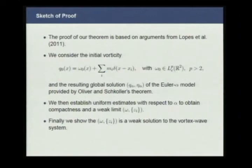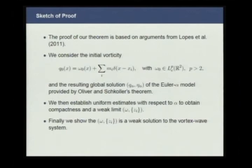The sketch of the proof uses as a base arguments from the paper of Lopes, Nussenzveig Lopes, and Miot. We consider the initial vorticity as the superposition of point vortices and background vorticity omega_0 with omega_0 in L^p, p bigger than 2, compact support. We consider the global solution from the Oliver-Shkoller theorem, establish uniform estimates with respect to alpha to obtain compactness and a weak limit, and finally show that this weak limit is a weak solution of the vortex wave system.